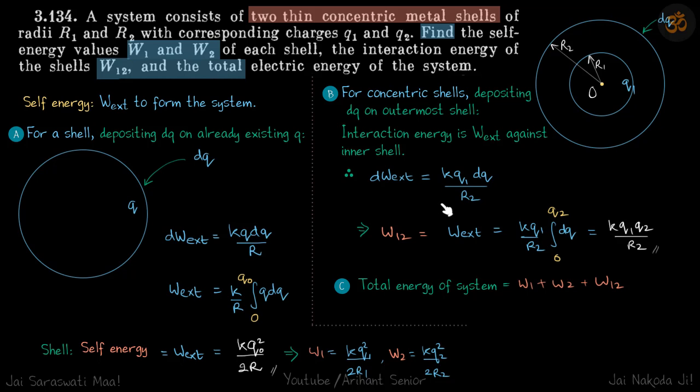So we just integrate this, and that will be the total work external, that as we defined as the interaction energy between the two. So it will be kQ1 by R2 integral dQ. dQ integrated, final charge is Q2, 0 to Q2, it becomes kQ1Q2 by R2, which is our answer, the interaction energy between the two.